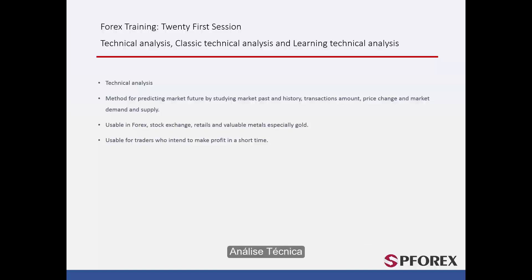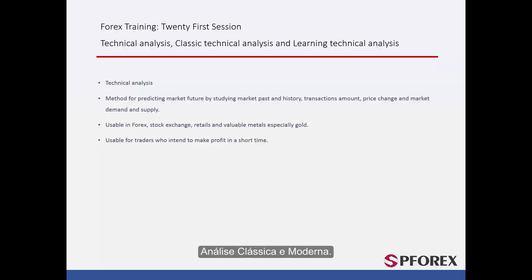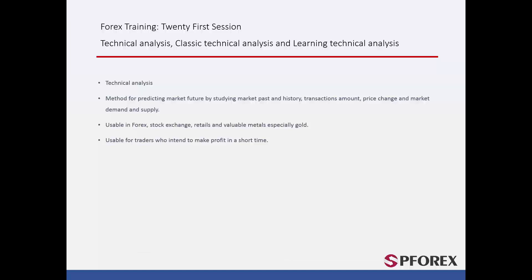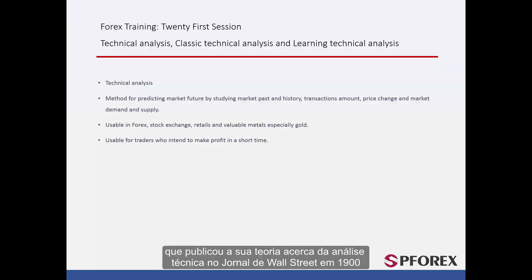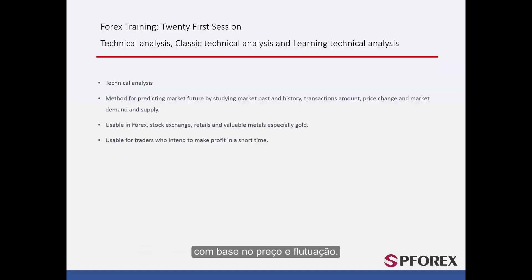Technical analysis is categorised into two groups: classical and modern analysis. Classical technical analysis was established by Charles Doe, who published his theory about technical analysis in the Wall Street Journal newspaper in 1900, on the basis of price change and fluctuation.